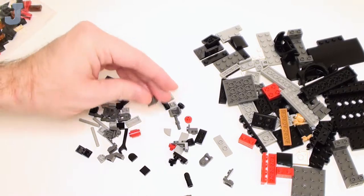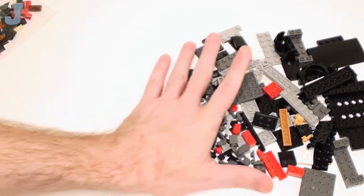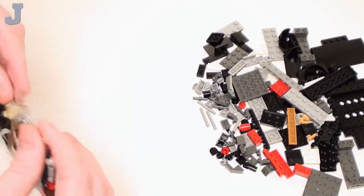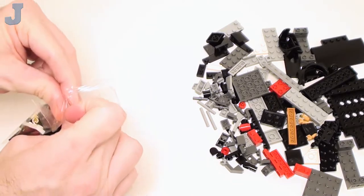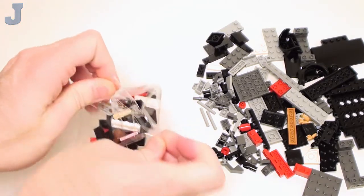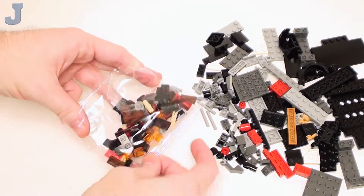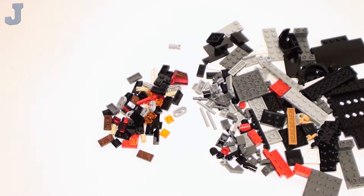And some quarter round 1 by 1 tiles, round bricks, regular 1 by 1 bricks. Maybe that's why I'm yawning, the color palette is not bright enough. It's just meh.